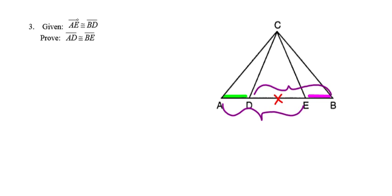AE is larger than AD — we're finishing smaller than we started, which tells us we're going to have to use subtraction. From the picture, we can see that the piece we're going to have to subtract is DE.